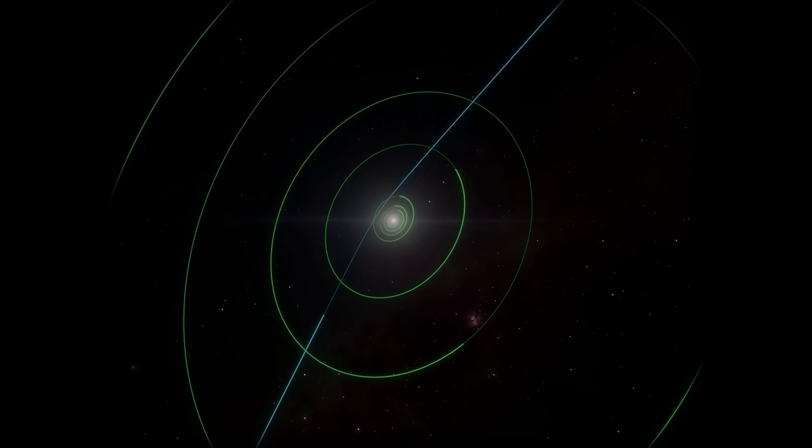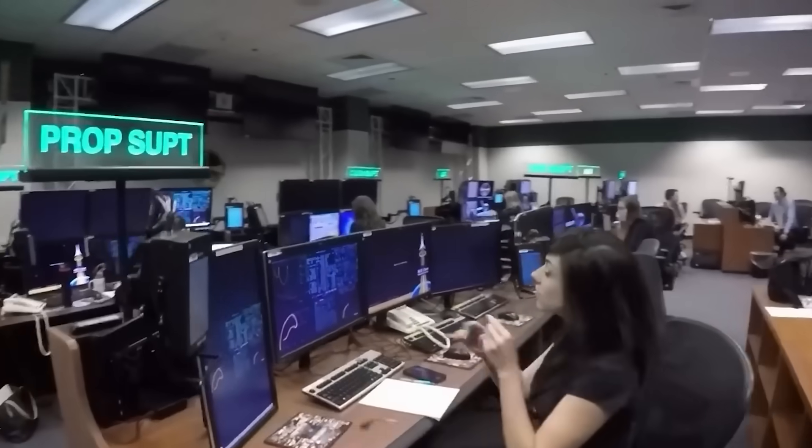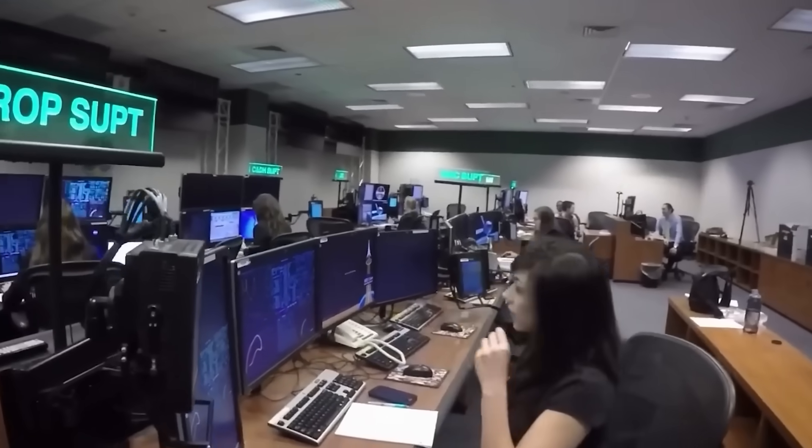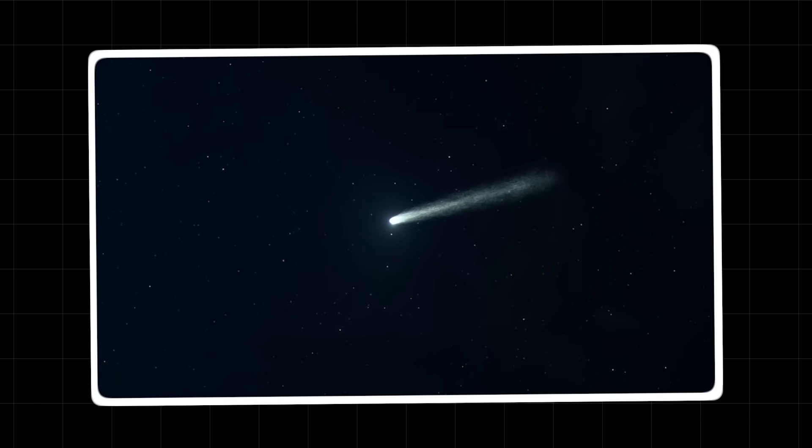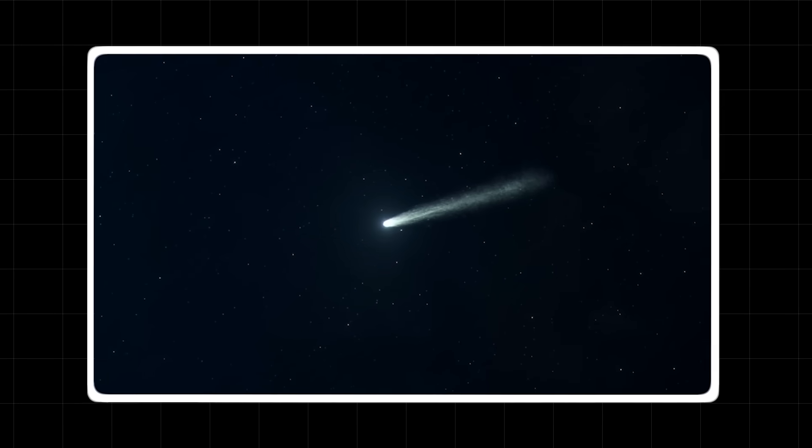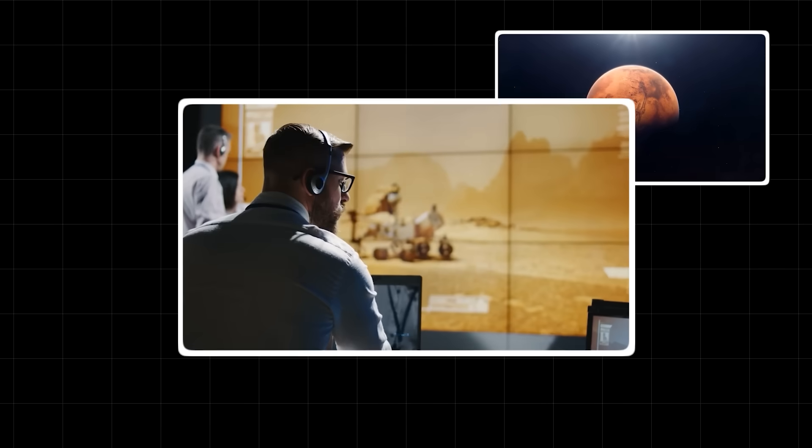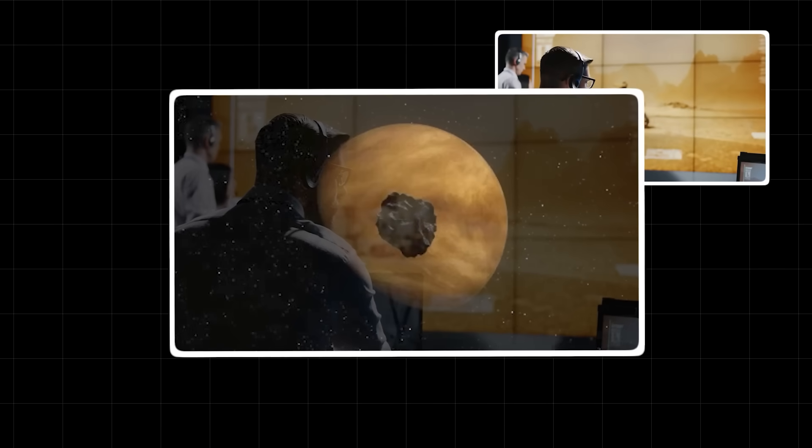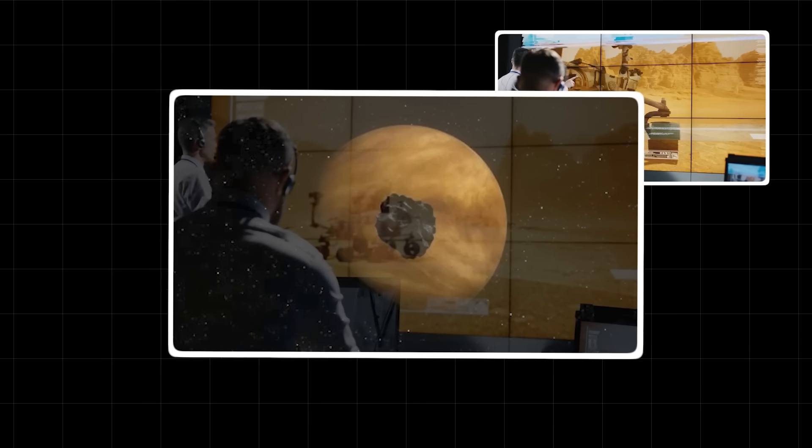But now, its silent journey has been interrupted by the gravitational pull of our sun, and it has been drawn into a path that has sent a wave of alarm through the scientific community. This celestial wanderer is on a direct collision course with Mars. The crimson planes of the red planet, a world that has captivated human imagination for centuries, is now the target of a cosmic projectile of immense power.